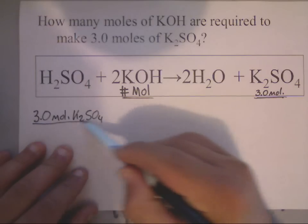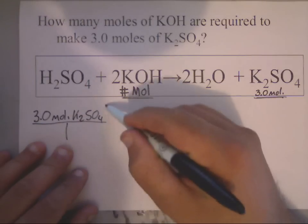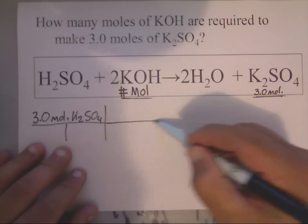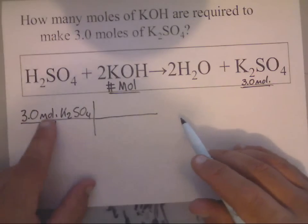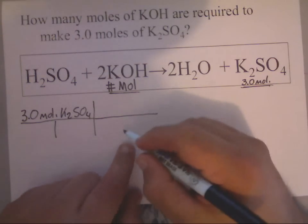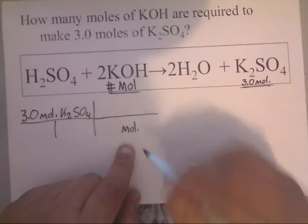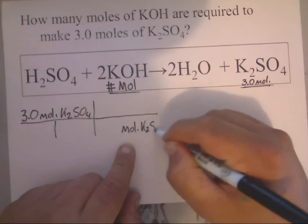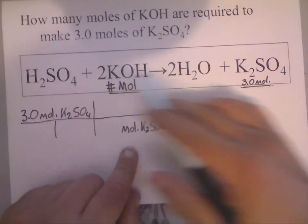Notice that you are given 3 moles of potassium sulfate. Now, I'm going to take the given and put it over 1. Now, my next step is to figure out what I'm going to write here. Well, if this is moles of potassium sulfate, moles of potassium sulfate will go here.